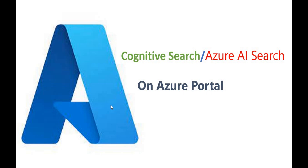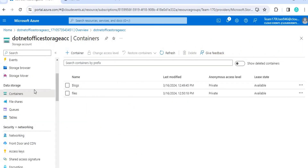Hello everyone, welcome back to the dot net office. We are continuing on the cognitive search — how we create the cognitive search or AI search on the Azure portal. In the previous video we created our data source, the blob storage named 'blog stories', and uploaded one file into it. Before proceeding, I recommend watching the previous video where we created the data source.